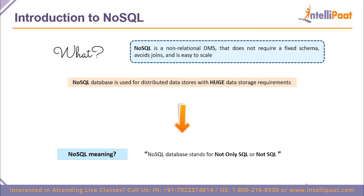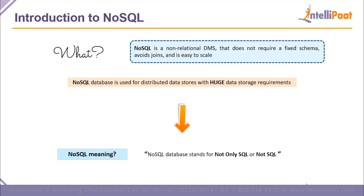MongoDB is one of the world's best NoSQL databases. NoSQL is a non-relational database management system where data is not interrelated to each other, it does not have a fixed schema, and concepts like joins don't apply. A NoSQL database can be spread across multiple systems and scaled at a very rapid pace. This is one of the reasons why NoSQL has gained so much traction in today's world — it is used for distributed data storage needs and huge data storage requirements. The term NoSQL actually means 'not only SQL' or 'not SQL.'